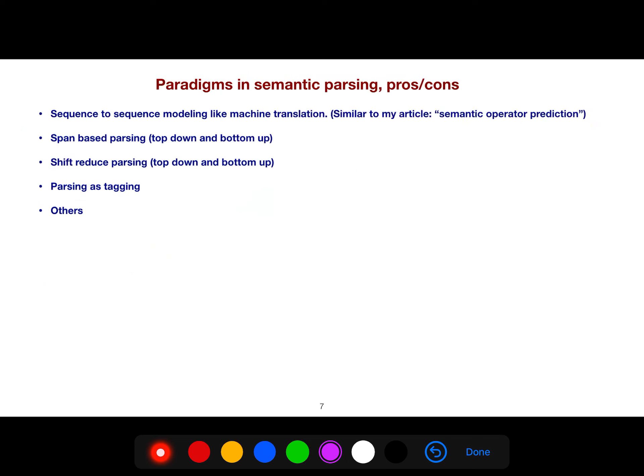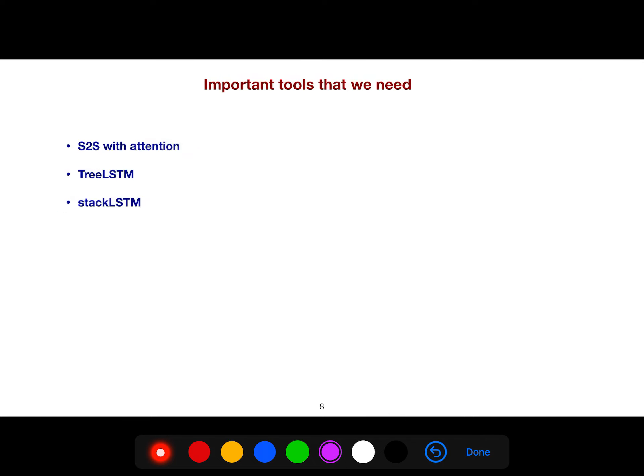There are paradigms in semantic parsing. There are pros and cons. For example, you can use sequence-to-sequence model with attention, like machine translation, similar to my article Semantic Operator Prediction in 2023. You can use span-based parsing, top-down and bottom-up. Or shift-reduce parsing, top-down and bottom-up. Parsing is tagging. People in Zurich, Switzerland are interested in that as well. And there are other paradigms as well.